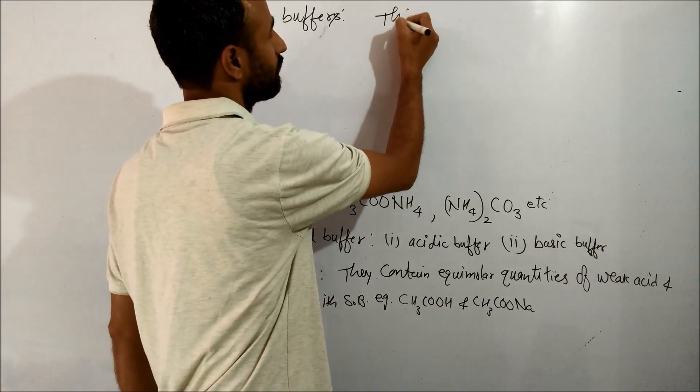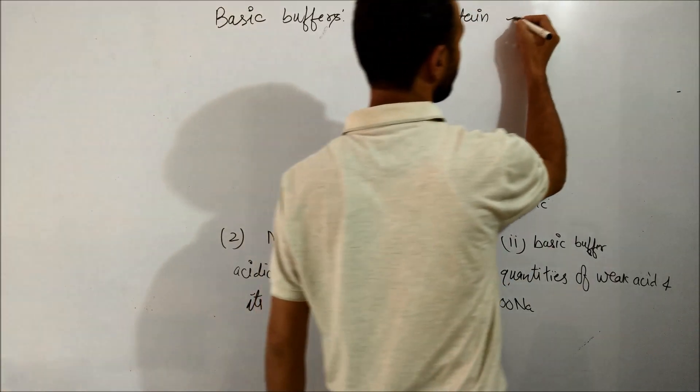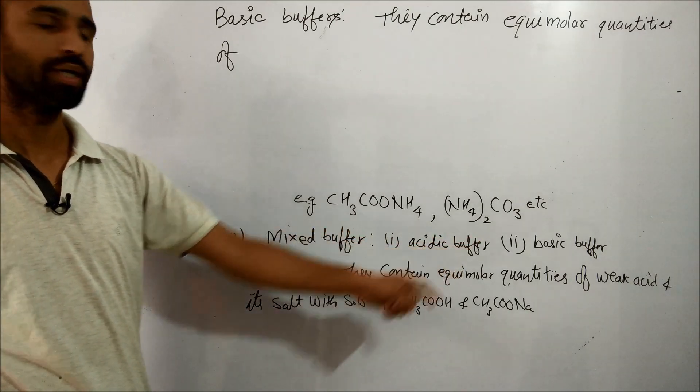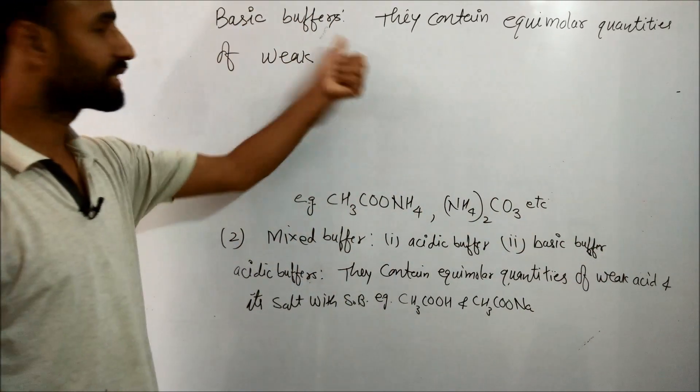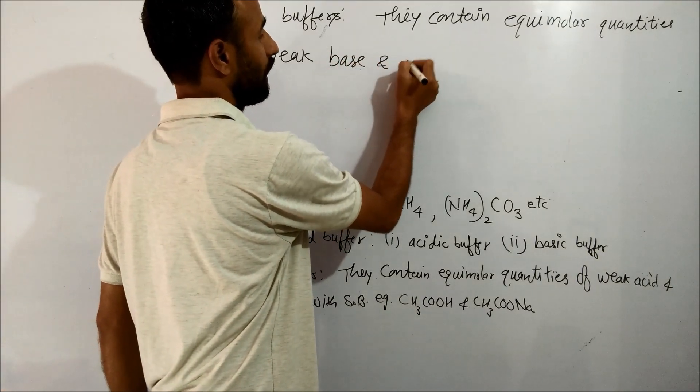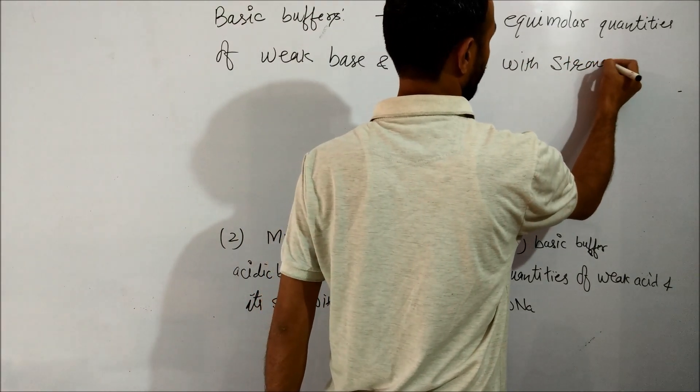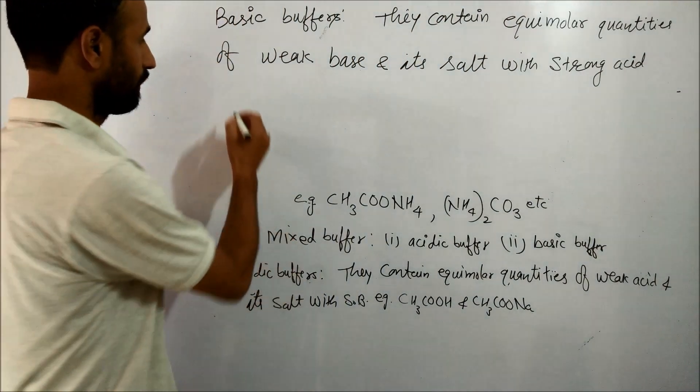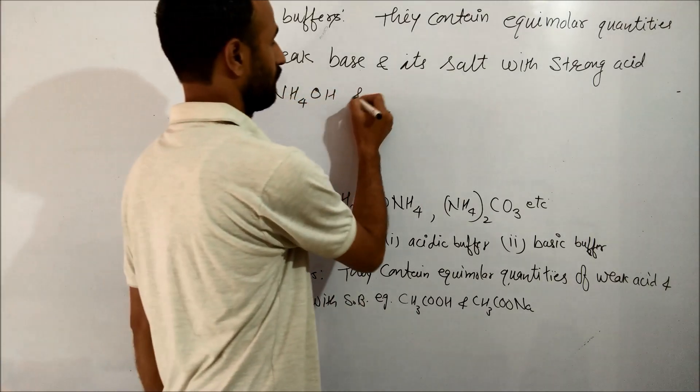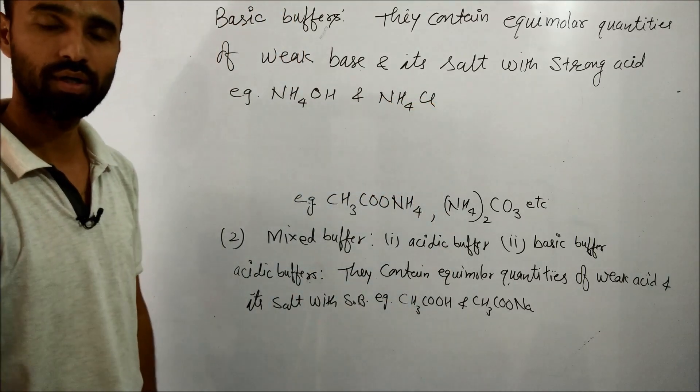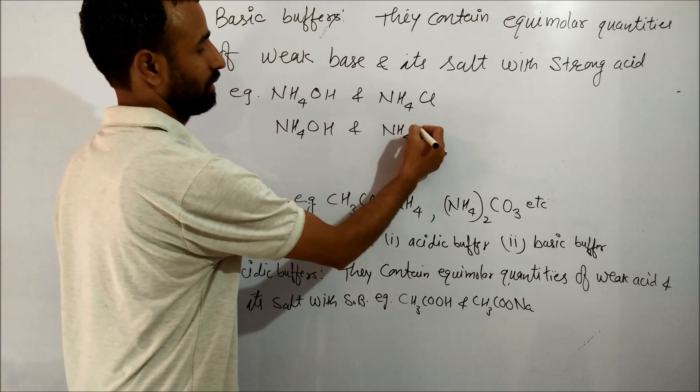Basic Buffers contain weak base and its salt with strong acid. For example, Ammonium Hydroxide and Ammonium Chloride, or Ammonium Hydroxide and Ammonium Nitrate.